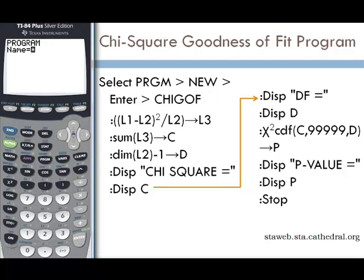We're going to name our program CHIGOF. Right now the alpha is flashing, so that means our alpha is locked, so we'll just choose the green key and type C-H-I, then G-O-F. Press ENTER. Now we'll want to enter our program.